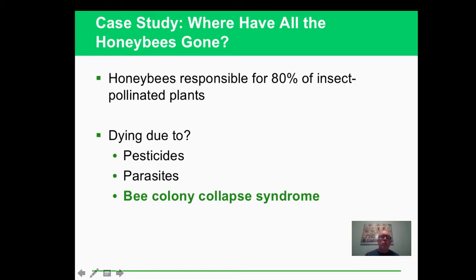Honeybees are another concern - they are big pollinators for us. In recent years we've been seeing a drop-off in the honeybee population. Albert Einstein has famously been quoted as saying when the honeybees go, the humans go as well. So it seems like we would want to keep the honeybees around. We're still trying to figure out what has caused a collapse in the honeybee population - there are some theories out there and they don't know exactly.